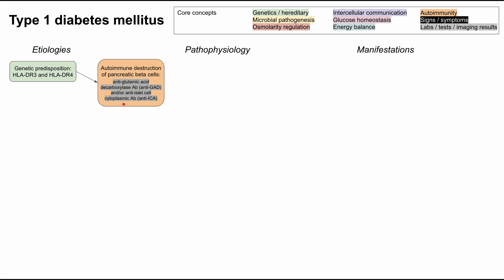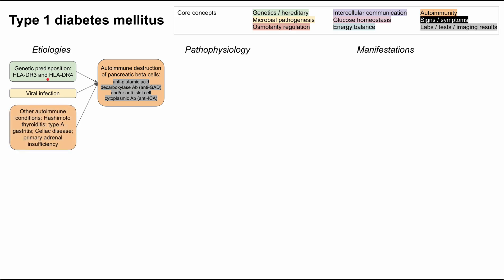There are three big factors that are worth knowing. First, people with type 1 diabetes can have a genetic predisposition to the disease — there are HLA phenotypes in particular, HLA-DR3 and HLA-DR4. Secondly, it can sometimes be precipitated by a viral infection. And lastly, it's highly associated with other autoimmune conditions such as Hashimoto's thyroiditis, type A gastritis, celiac disease, and primary adrenal insufficiency. All of these are autoimmune conditions where the body makes an errant antibody that attacks some part of the body, and type 1 diabetes is as well.